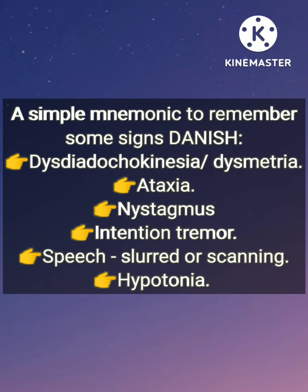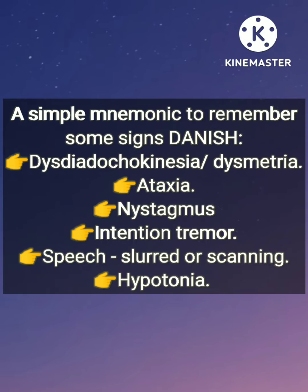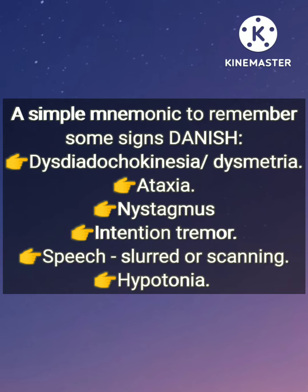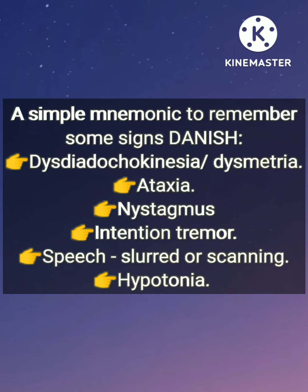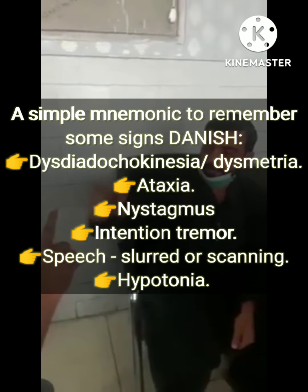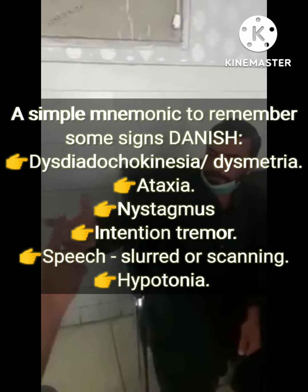A simple mnemonic to remember these signs is DANISH. D stands for dysdiadochokinesia or dysmetria. A stands for ataxia. N is for nystagmus. I is for intention tremor. S stands for slurred or scanning speech. And H is for hypotonia.